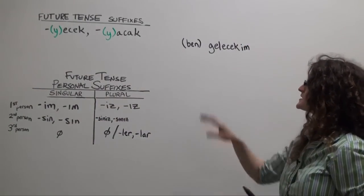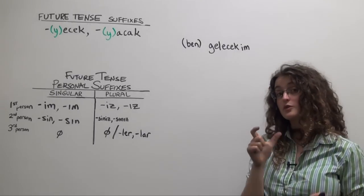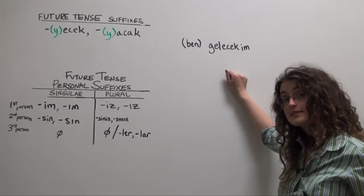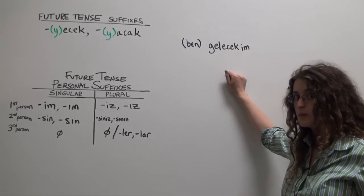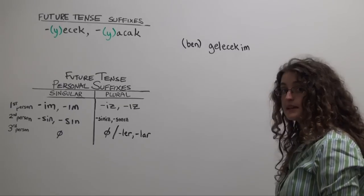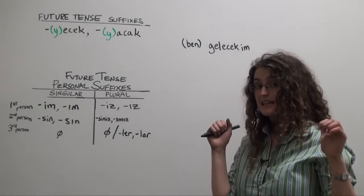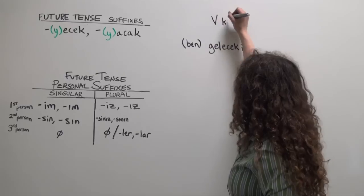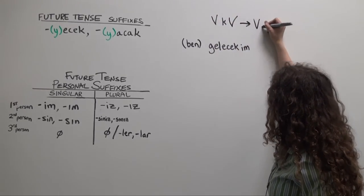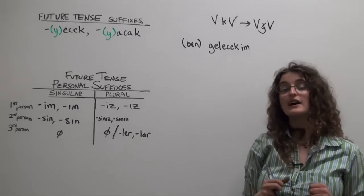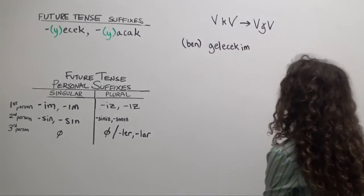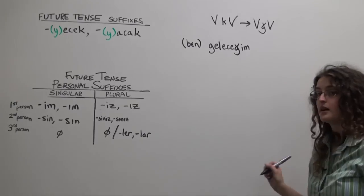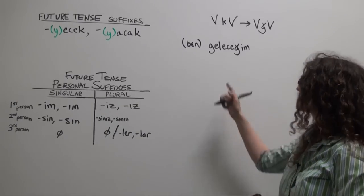But because this k is sandwiched between those two vowels, you see how it is stuck between two vowels, it is going to undergo consonant alternation, which you can learn more about elsewhere. What does this mean? That means that in the future tense, when a k is sandwiched between two vowels, with a vowel on either side, it's going to become a soft g, a yumuşak g. So ben gelecek im becomes ben geleceğim. Ben geleceğim. Ben geleceğim. I will come.